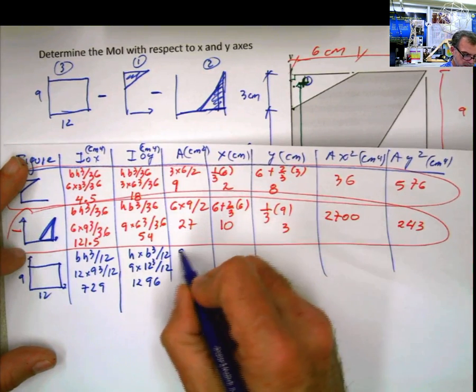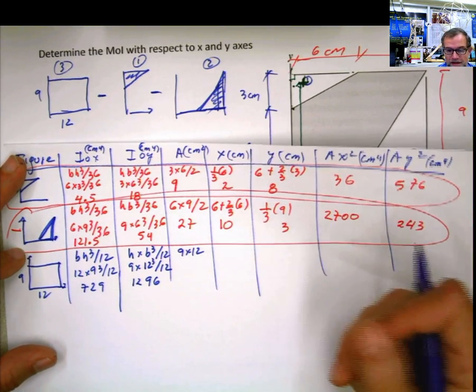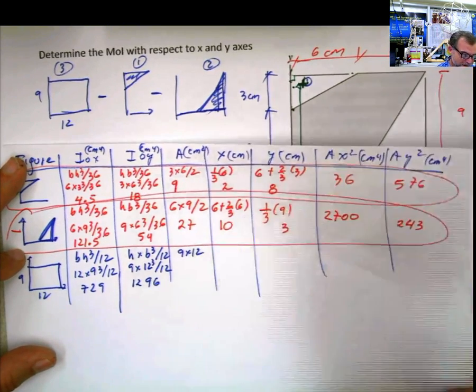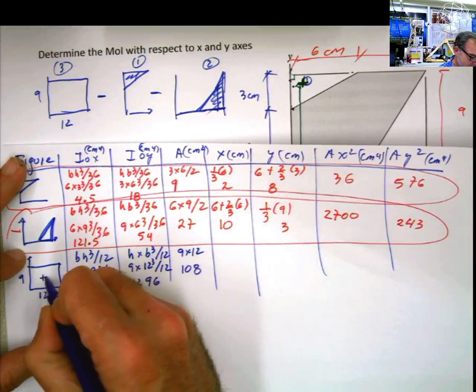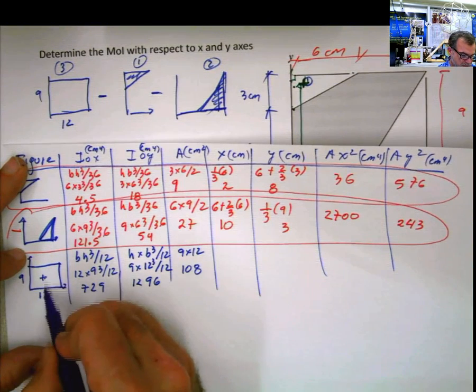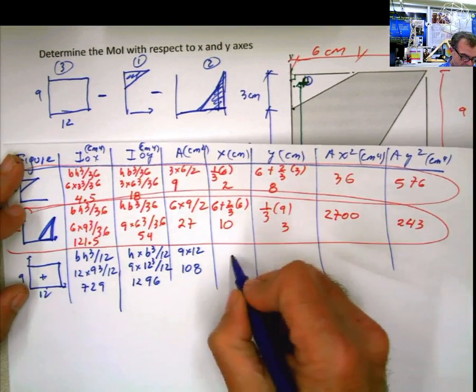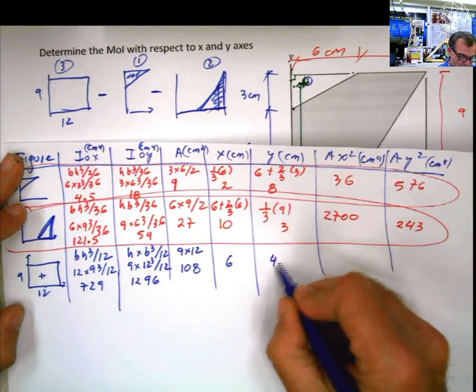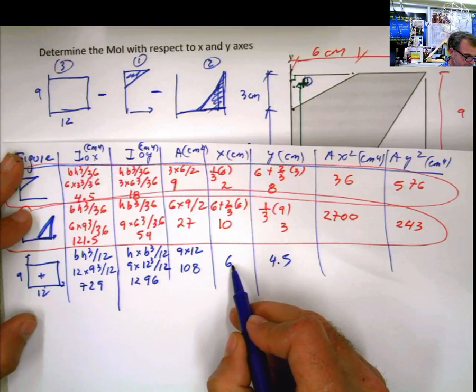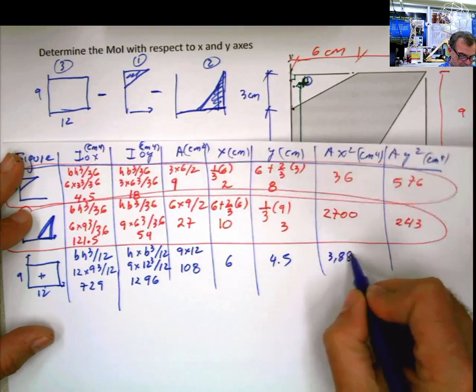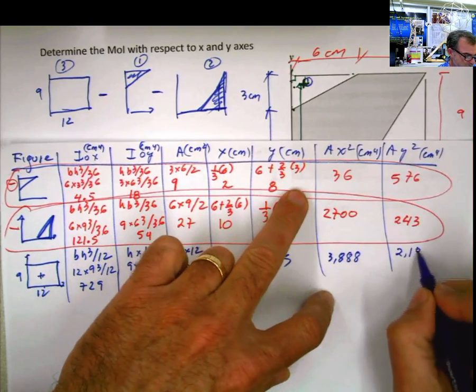Now, area 9 times 12. Don't divide by 2, please. Because that's the other thing I emphasize so many times. Divided by 2, divided by 2. And then people calculate the rectangle and divide by 2. 108. And then what is x? x is the location of the centroid for that figure. In x, half of 12, 6. In y, half of 9, 4.5. And now do area times this squared, which is 36. That's 3,888. And area times 4.5 squared is 2,187.